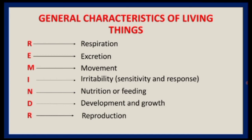Development and growth: living organisms convert food into cells, and this increase in number of cells causes the organism to increase in size. Plants show indefinite growth — in flowering plants, most growth occurs at the tips of roots and shoots, known as apical growth. Animals exhibit definite growth, where growth occurs equally in all parts of the body, unlike plants where it occurs at the tips of shoots and roots.